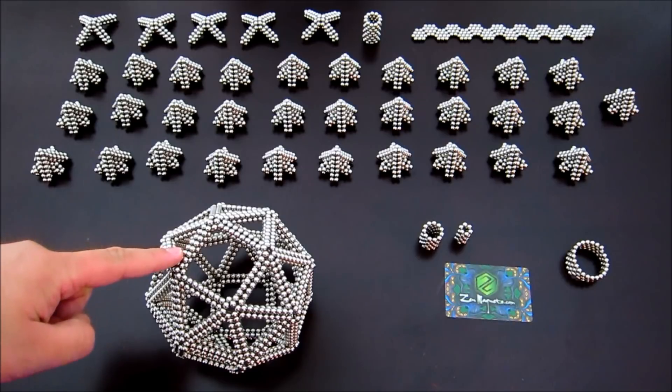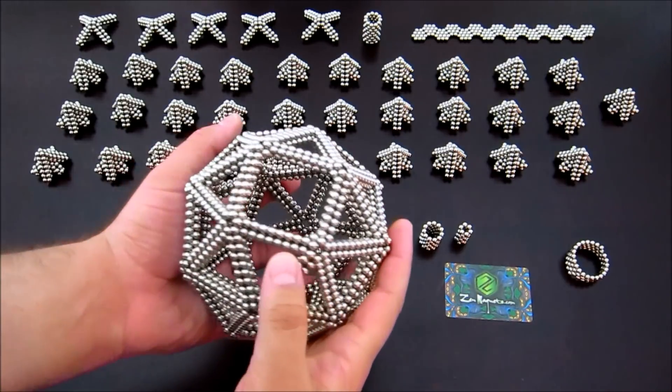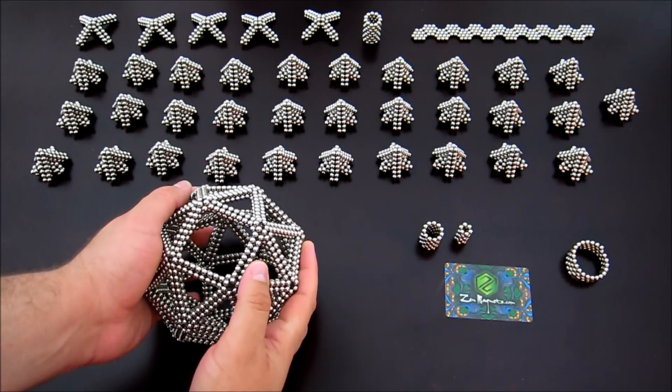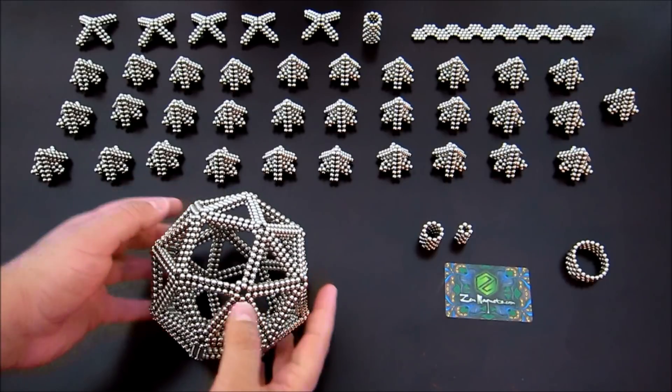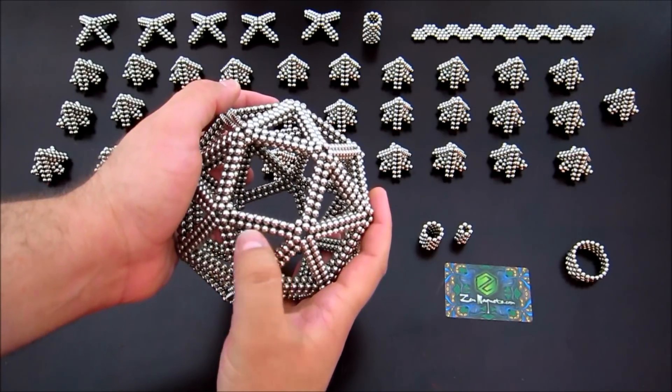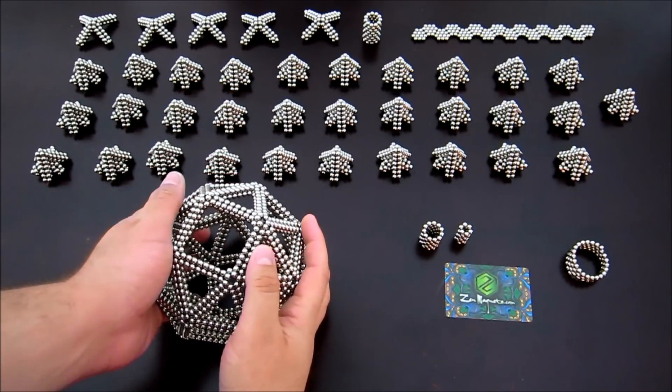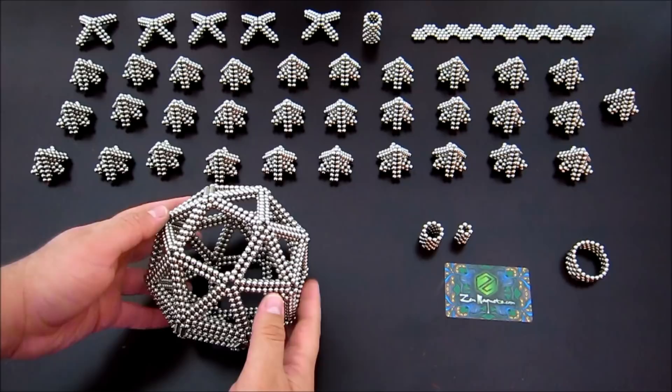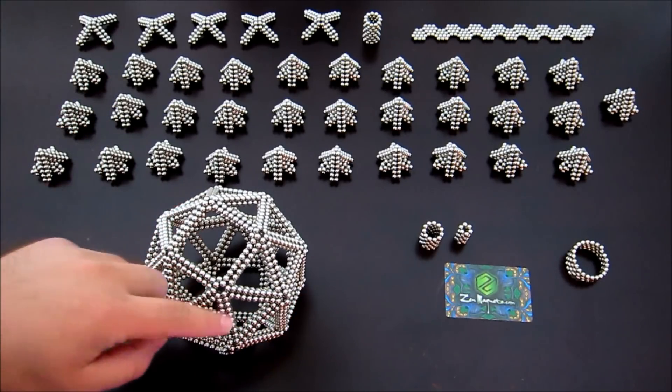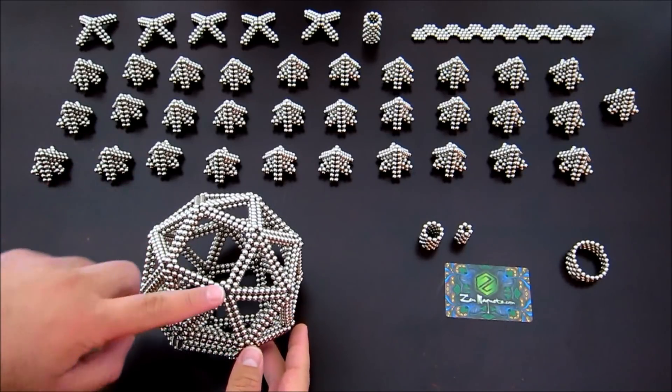Now this one here is one magnet shorter on the edge length than the one that I made in my tutorial video for how to make a snub cube. That one had an edge length of nine magnets between the vertices; this one has an edge length of eight magnets. So go ahead and follow that tutorial video to build this and remove two more magnets from each edge of those subunits beyond what I showed in that video, and you'll end up with an edge length of eight magnets.